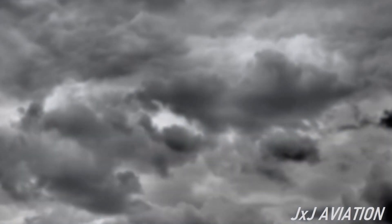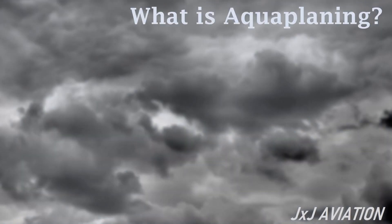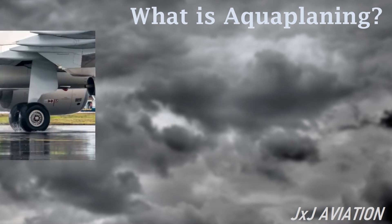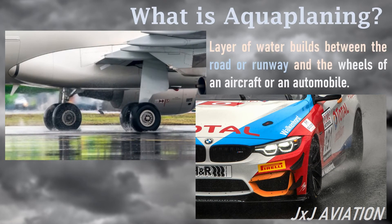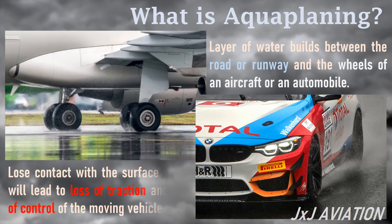What is aquaplaning? Aquaplaning occurs when a layer of water builds between the road or runway and the wheels of an aircraft or automobile. The wheels will lose contact with the surface, which will lead to loss of traction and loss of control of the moving vehicle.